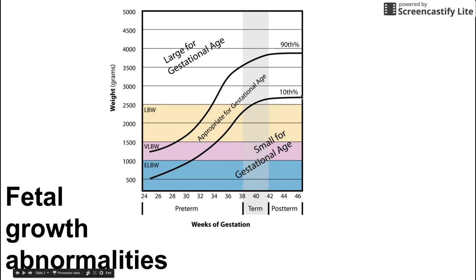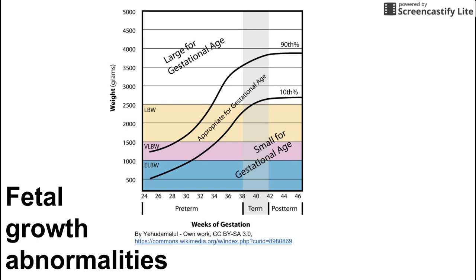A baby that falls under the 10th percentile would be called small for gestational age, and that's what we're going to talk about first. Small for gestational age, or SGA, is a baby whose weight falls below the 10th percentile for its gestational age.